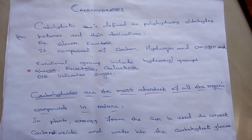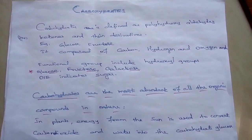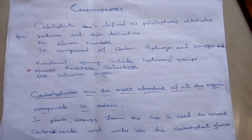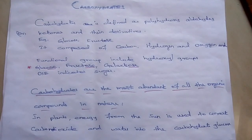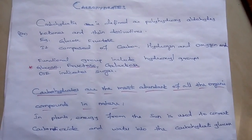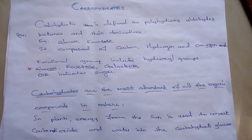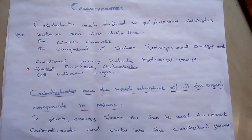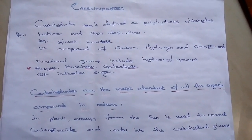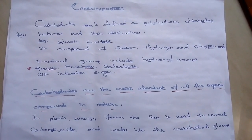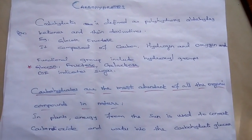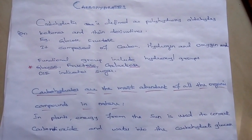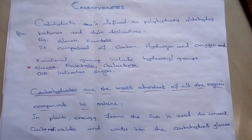What is meant by Carbohydrates? Carbohydrates is defined as polyhydroxy aldehydes or ketones and their derivatives. For example, glucose and fructose. Carbohydrates is composed of carbon, hydrogen, oxygen, and the functional group includes the hydroxyl group. Glucose, fructose, and galactose indicate sugars.